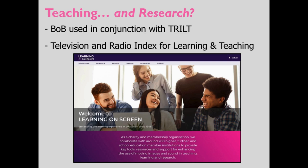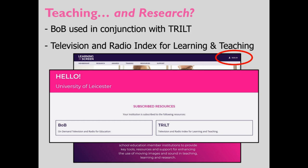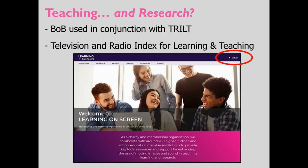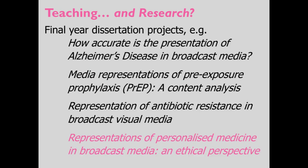TRILT is a bit hard to find — it's almost hidden. You need to go onto the BOB site, log into your own account, and then access it as a separate archive. It overlaps with BOB in terms of content but is based on metadata rather than transcripts, and also includes the Radio Times index, the Shakespeare index, and other linkable resources. BOB has also been used in a research context with final year dissertations setting students non-lab projects — and one of those turned into a PhD project.